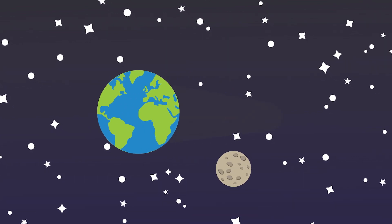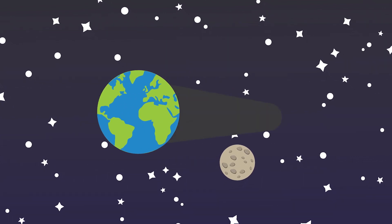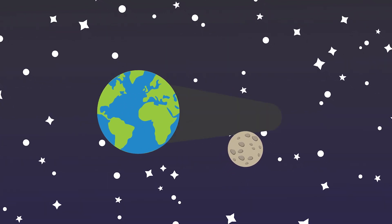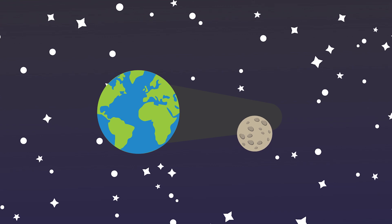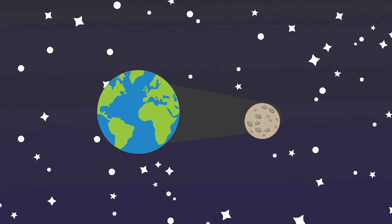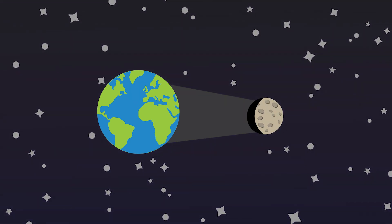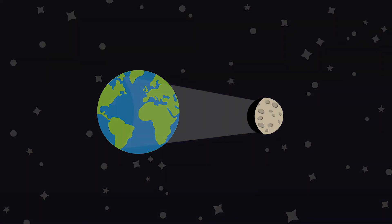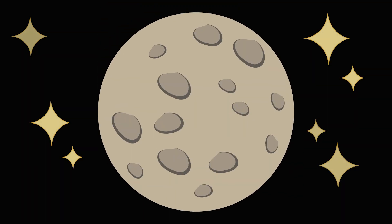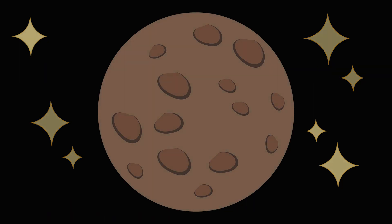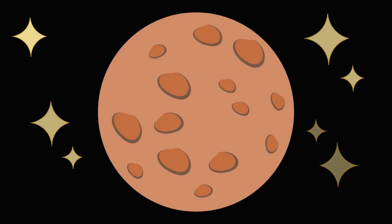Rarely, the moon's orbit takes it exactly through the center of the shadow, and that's when we get the rare total lunar eclipse. It happens during a full moon, so usually you think of a full moon as bright, but suddenly the full moon will dim and often redden as well.